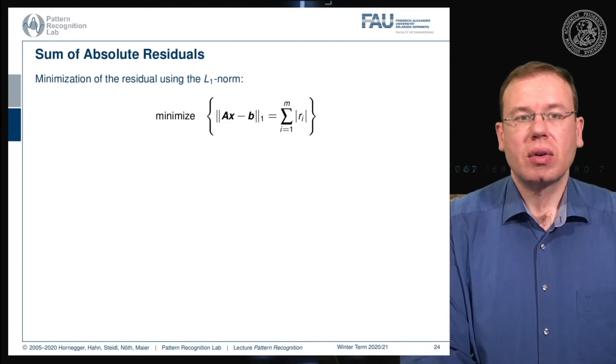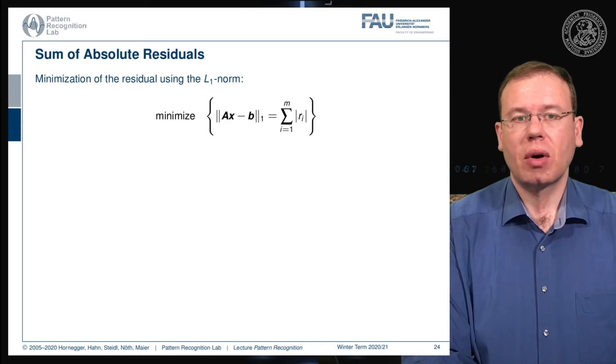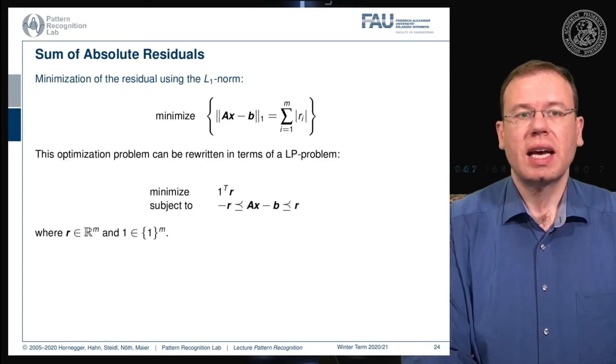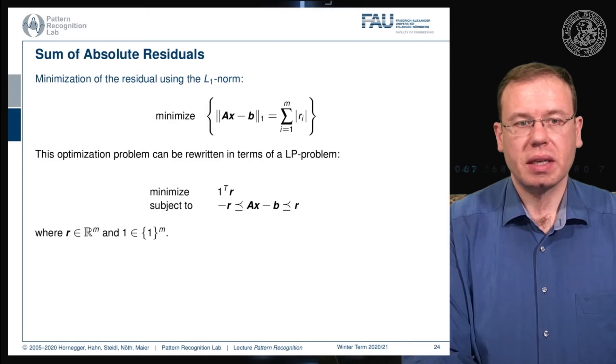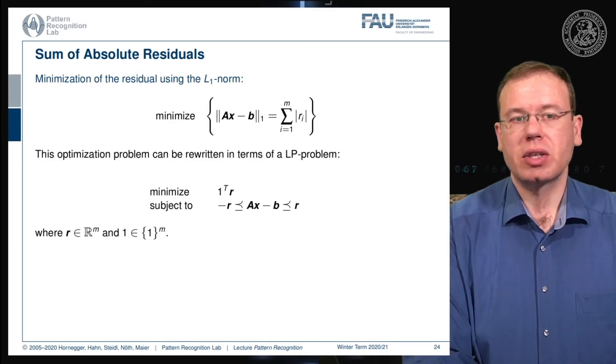We can also look into the minimization of the L1 norm. The L1 norm is the sum over the absolute values of the residuals. This can be rewritten into a minimization problem with this vector of one transpose r, used as an upper and lower bound in the constraint optimization. Again, r is a vector in an m dimensional space with this vector of ones only.